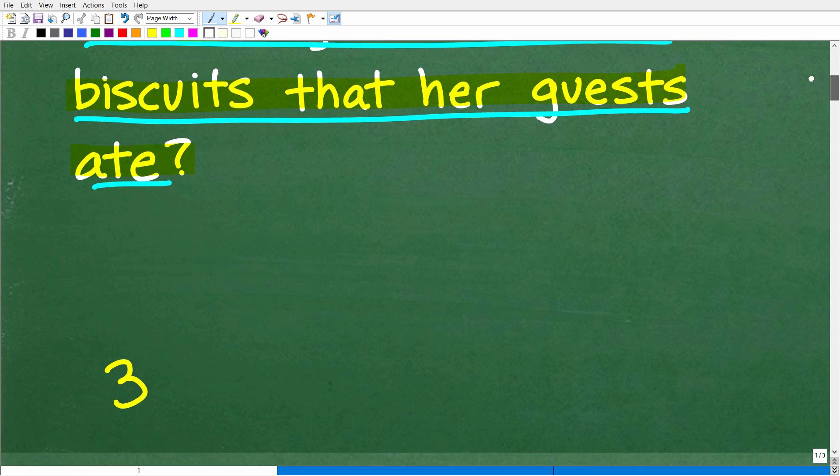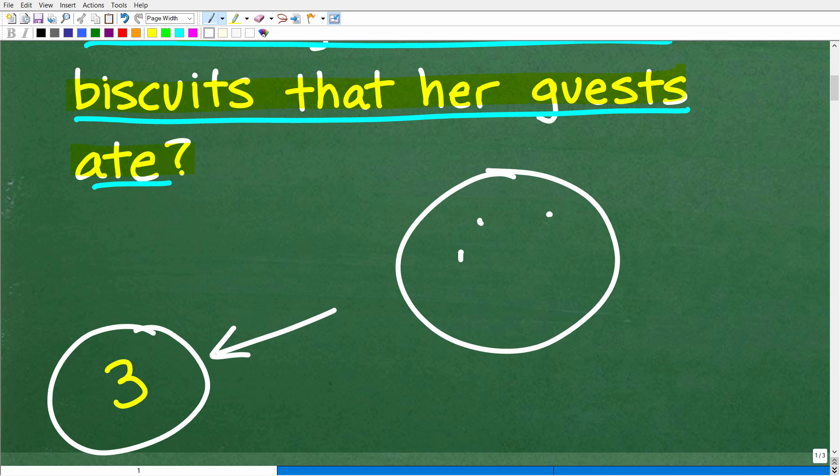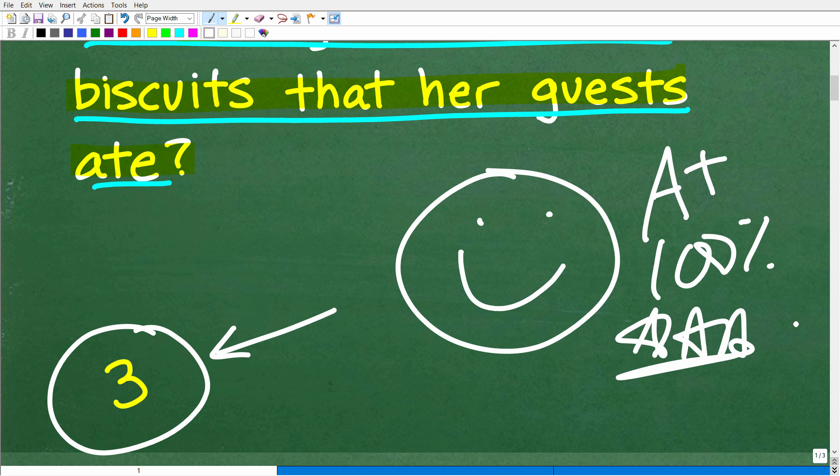which of course is three. All right, now if you did this right, we have to celebrate by giving you a nice little happy face and a plus 100% and multiple stars. So you can tell your friends and family that indeed you are a certified professional expert in the area of solving basic math word problems. And that's what we have right here.